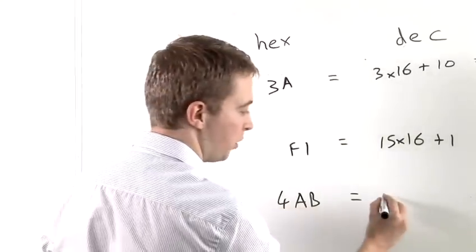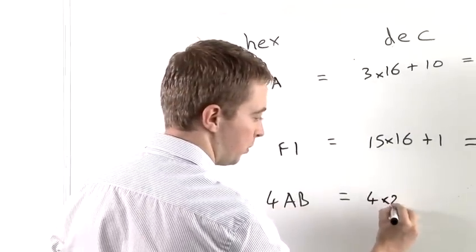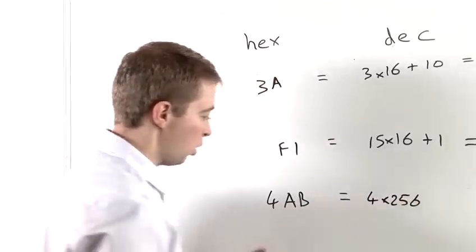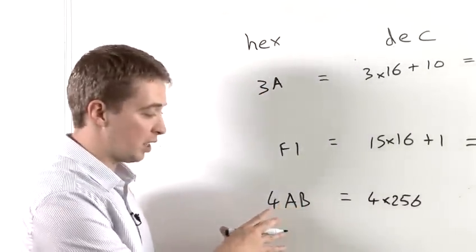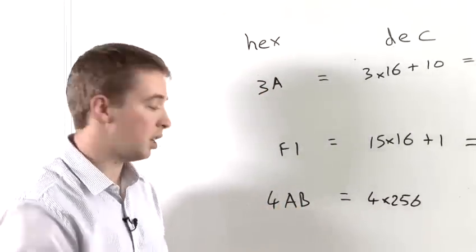So we have 4 times 256. We have A times 16. A in hexadecimal represents the number 10 in decimal.